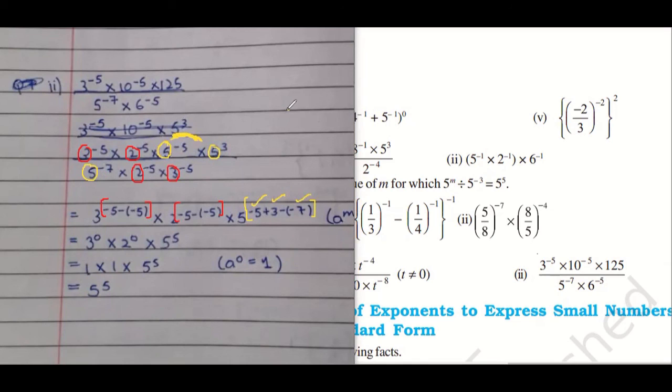Very good. So minus 5 plus 5 is 0. Good. This is also 0. This part, minus 5 plus 3 plus 7. Minus minus plus. So this is 10 minus 5, it will be positive 5. Very good.